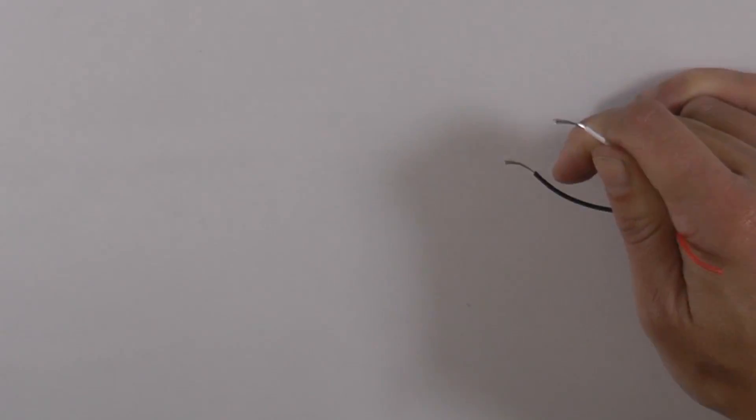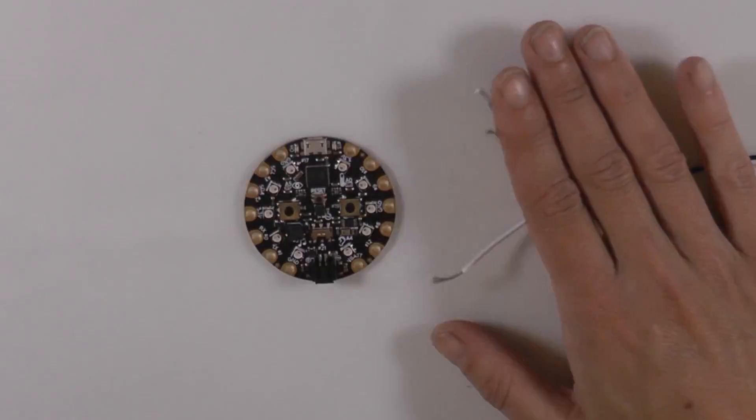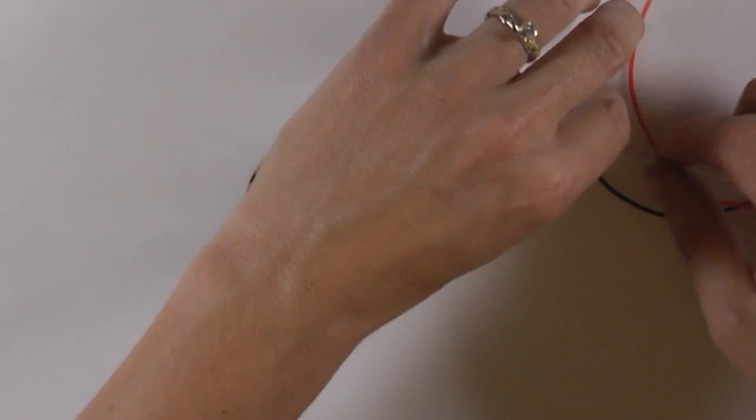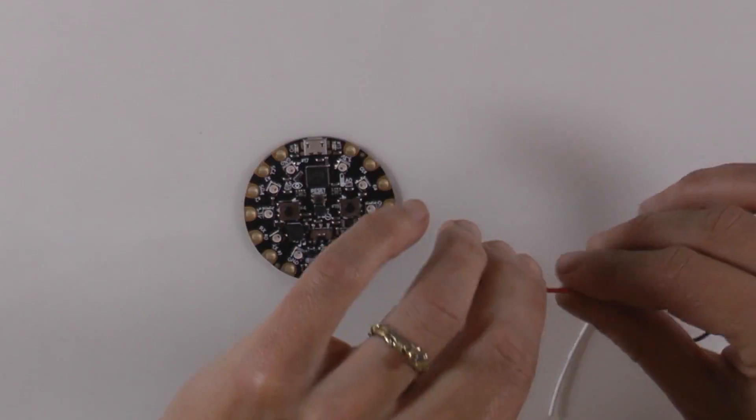Strip about a quarter inch off the other end of the wires. Attach red to V-Bad, white to pin 6, and black to ground.